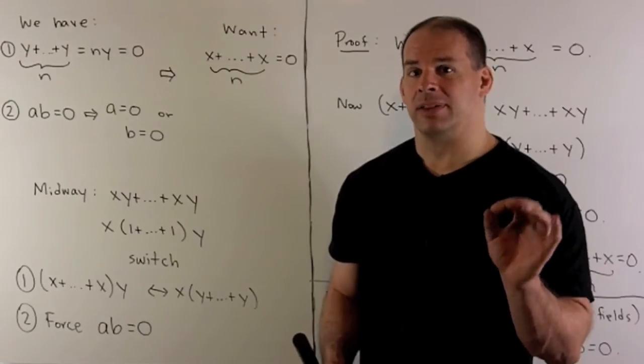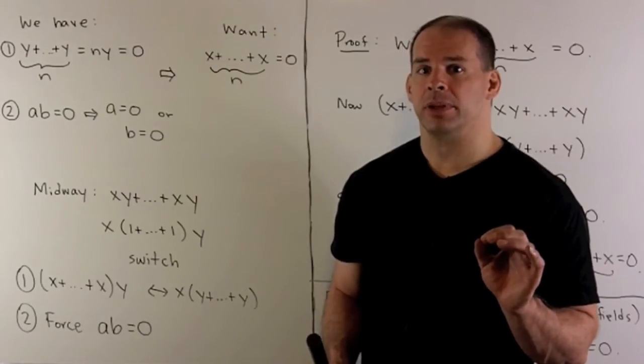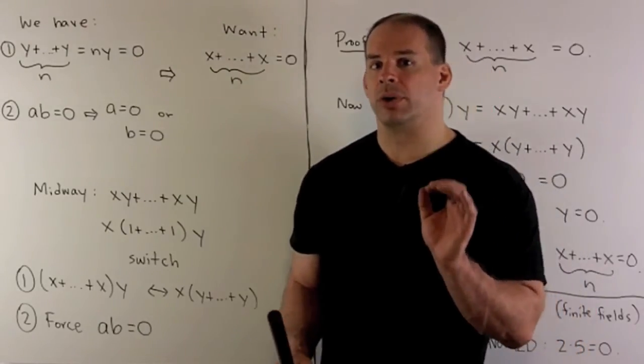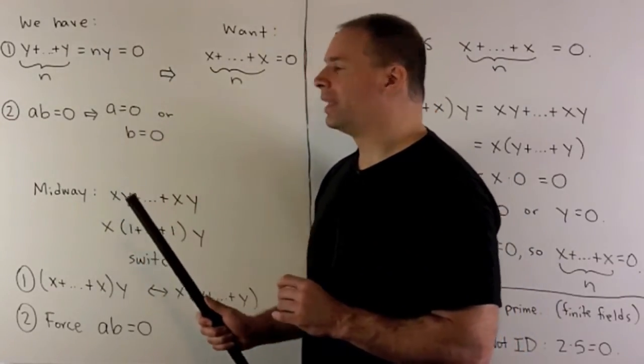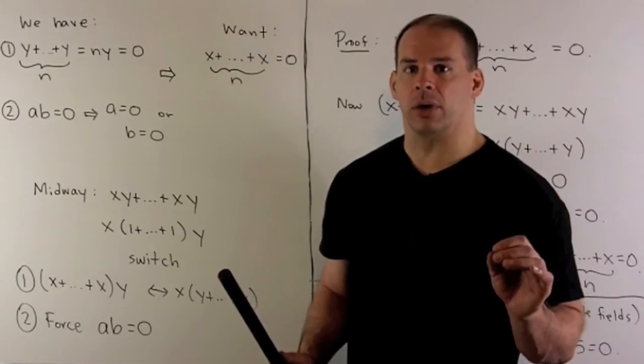Then we have the integral domain property. So here we have no zero divisors. We take a times b equal to zero. That means a is zero or b is zero.